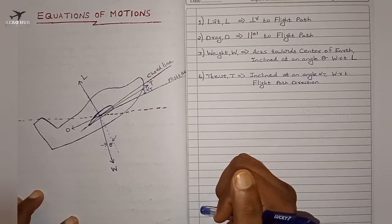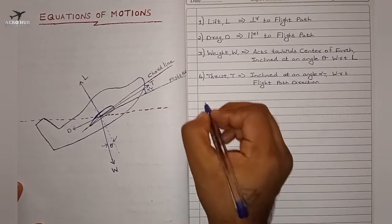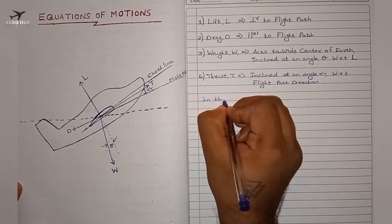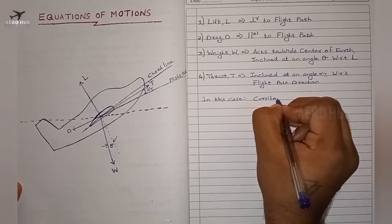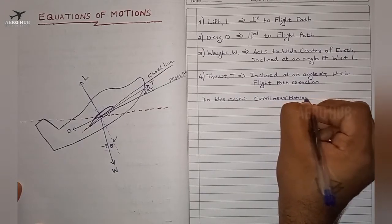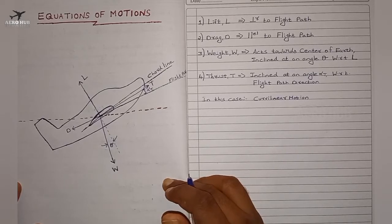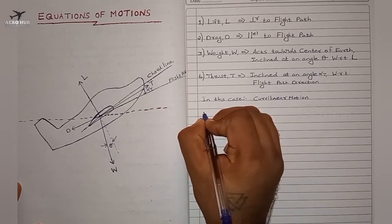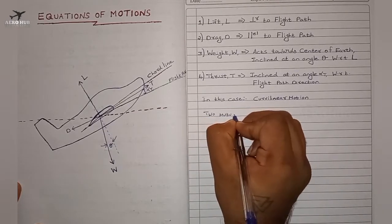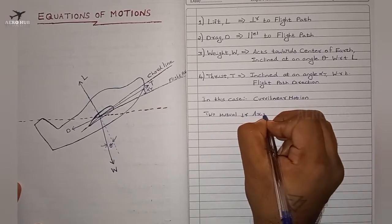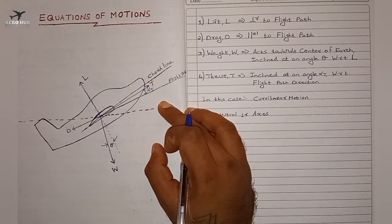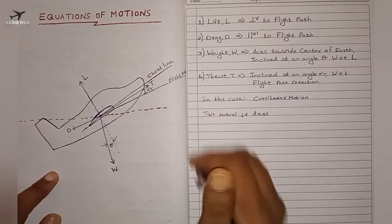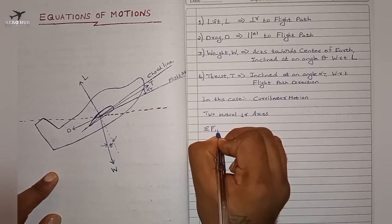In this case, the aircraft is operating in curvilinear motion. To find out the equations of motion, we have to define two mutually perpendicular axes: one along the flight path and a second axis perpendicular to the flight path. Along the flight path we have rectilinear motion, and perpendicular to the flight path we must consider centrifugal forces.